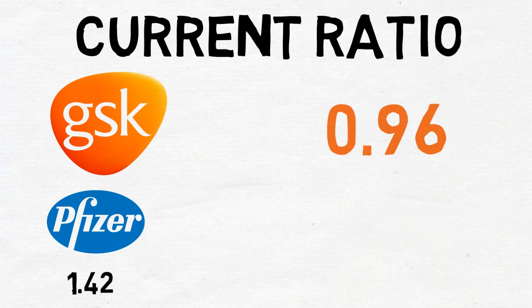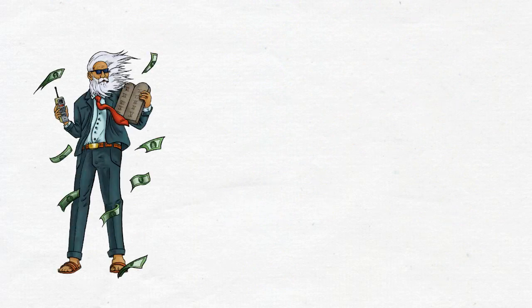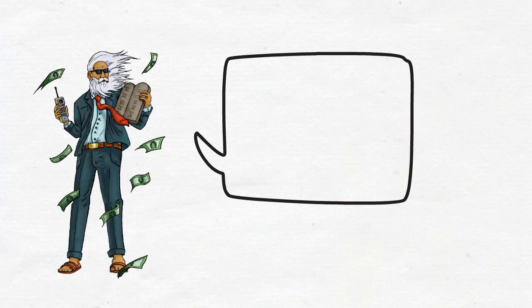Pfizer has a current ratio of 1.42, AstraZeneca has a current ratio of 0.82, AbbVie Inc has a current ratio of 0.86 and with that GlaxoSmithKline PLC passes the Dividend experiment test.